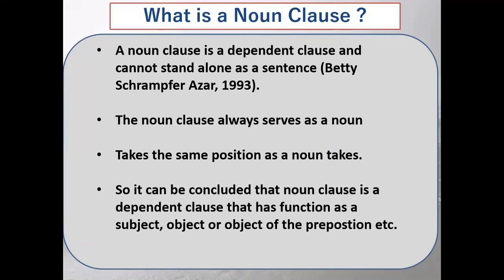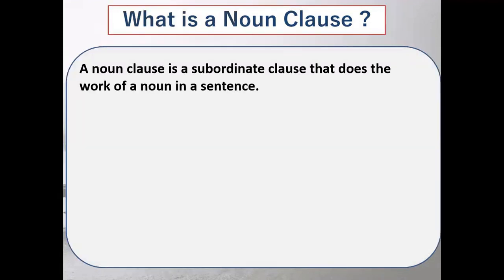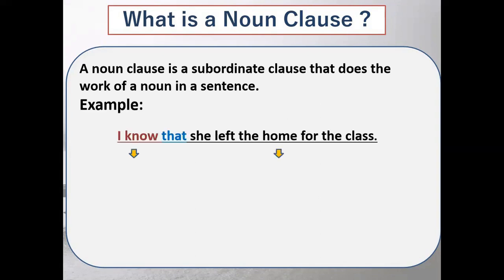We can confirm that a noun clause is a dependent clause that functions as a subject, object, or object of a preposition, etc. A noun clause is a subordinate clause because it begins with a subordinating conjunction. We can also call it a subordinating conjunction clause, as it starts with a subordinating conjunction and does the work of a noun in a sentence.